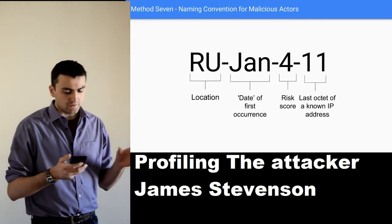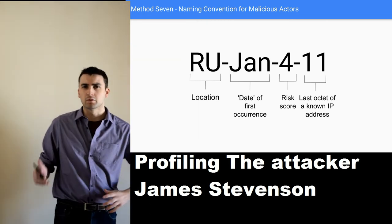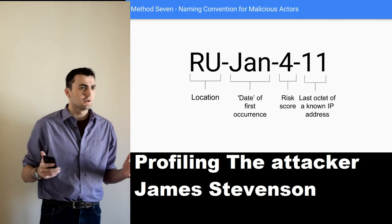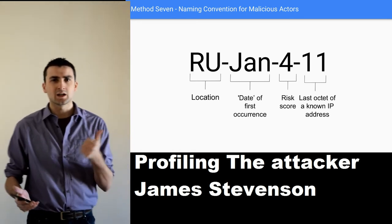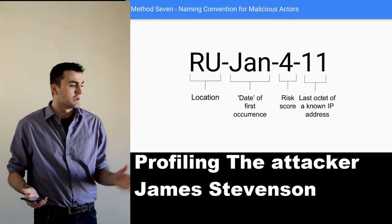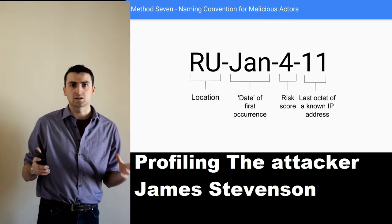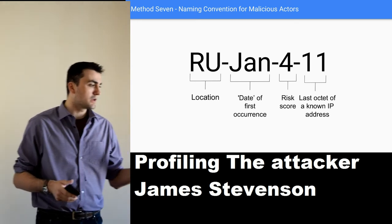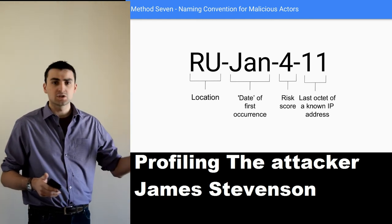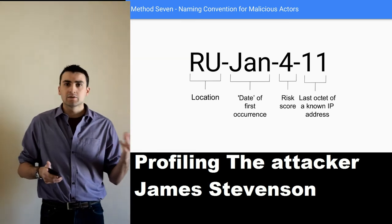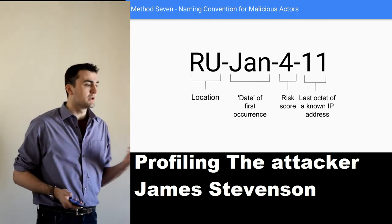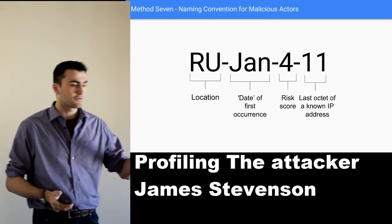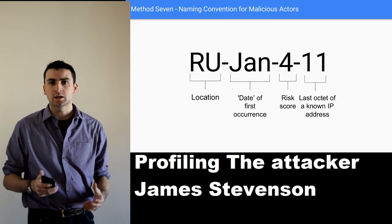We have a final method — method seven — which is more of a method 0.5. Instead of profiling, this method looks at categorising. We have this profile, this knowledge base of a malicious actor, but how do we identify them? We could take an IP address, a hash, or a MAC address. This is an example of how we could take a unique or sub-unique identifier for a malicious actor and instantly gauge information from a naming convention. Here we have four sections of a name: RU-Jan-4-11. This means the malicious actor was first seen originating from Russia in January, has a risk level of 4, and the last octet of their first-seen IP address is 11. Throughout this talk we've seen identifiers from China, Russia, and the United States, and they allow us to sub-uniquely identify malicious actors.